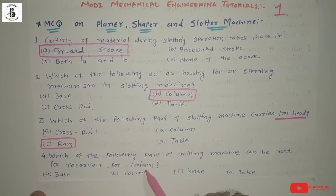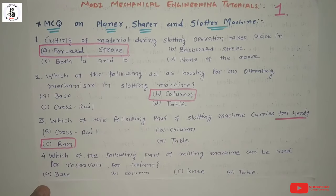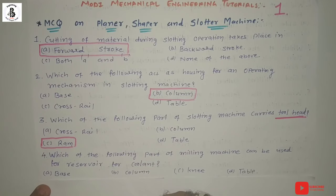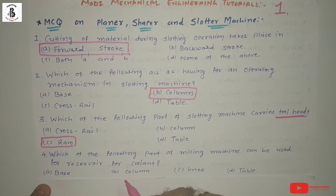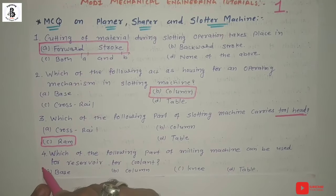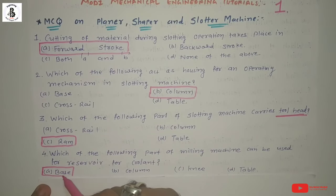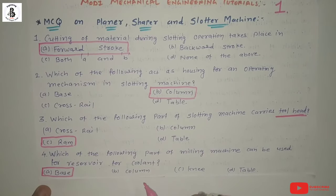Next question: Which of the following parts of the milling machine can be used as a reservoir for coolant? Option A: base, option B: column, option C: knee, option D: table. Coolant is used for cutting very hard materials and varies according to the workpiece material. The coolant is stored in the base, and by the application of a pump it is supplied to the cutting area. So the right answer is option A: base.